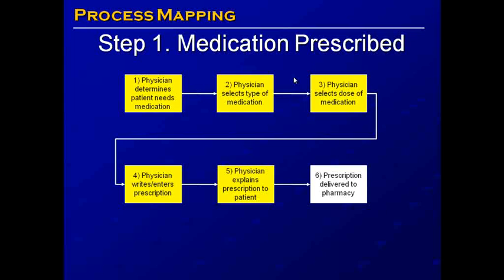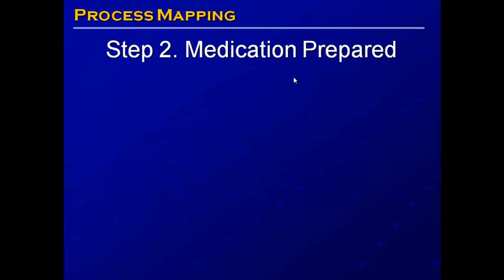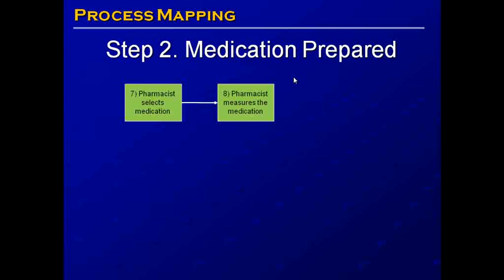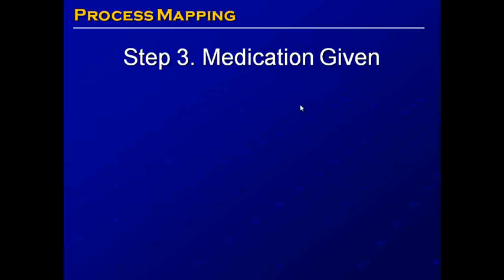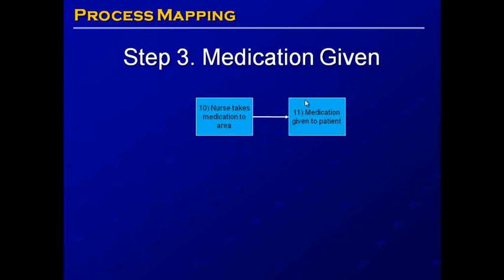Once the prescription is delivered to the pharmacy, we go on to step two — the medication is prepared. The pharmacist selects the medication, measures the medication, and then the medication is delivered to the nurse. The steps in green are performed by the pharmacist. Once the medication is delivered to the nurse, that takes us to step three, when the medication is given to the patient. The nurse takes the medication to the patient area, and then the medication is given to the patient.